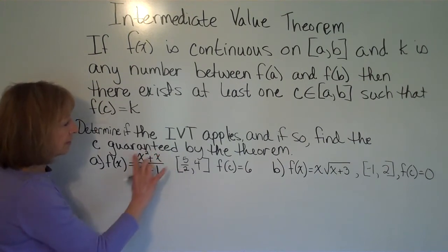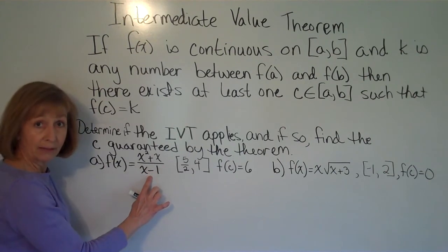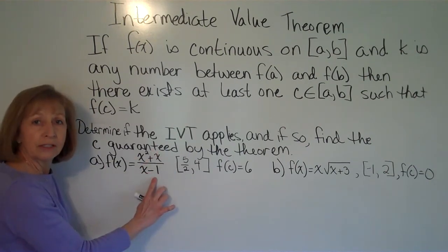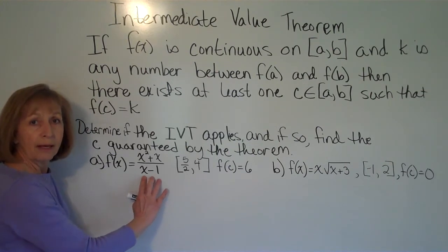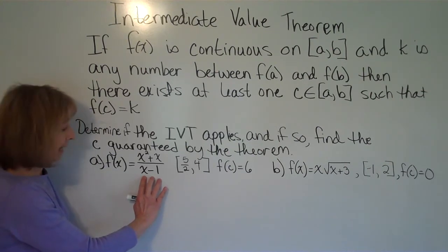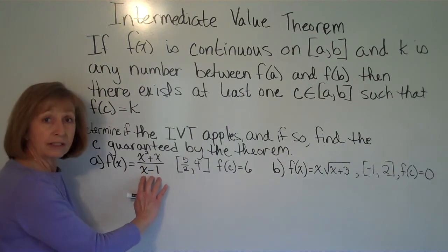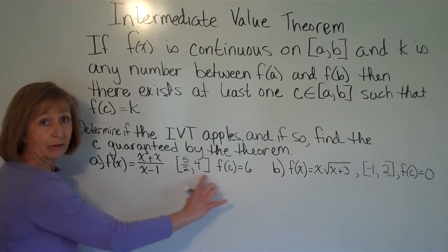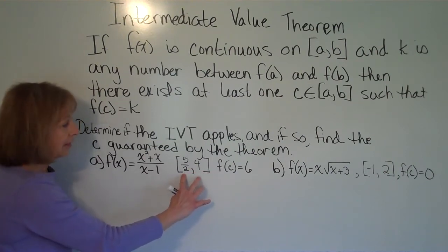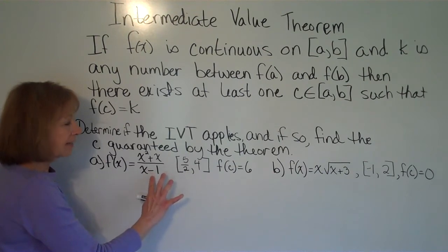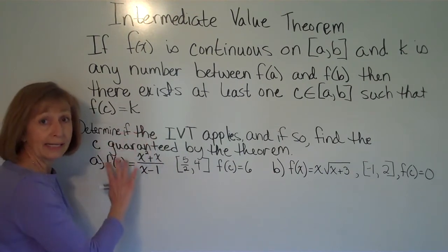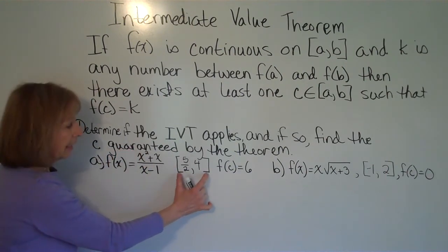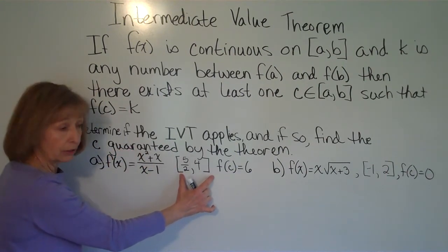This function is a rational function — a polynomial divided by a polynomial. The only value of x for which it is undefined is x = 1, because 1 − 1 gives 0 in the denominator. But 1 is not in this interval — the interval is 2.5 to 4. Since 1 is not in this interval, and the function is continuous everywhere except at x = 1, the function is continuous on the closed interval.